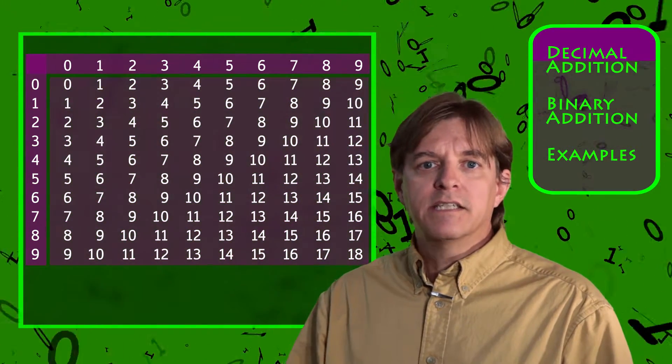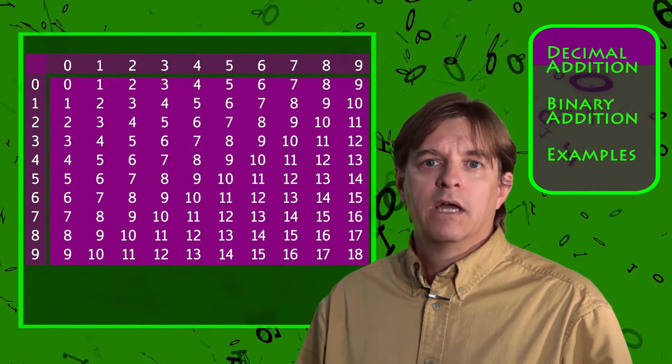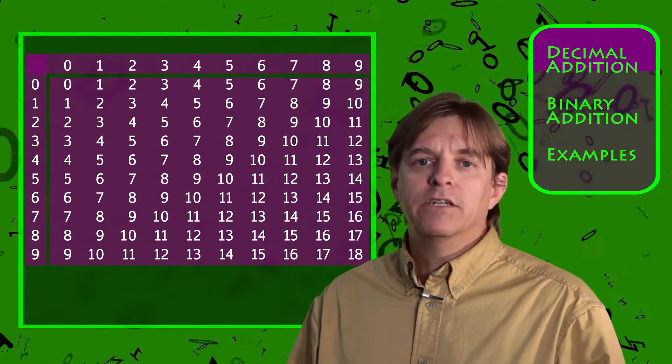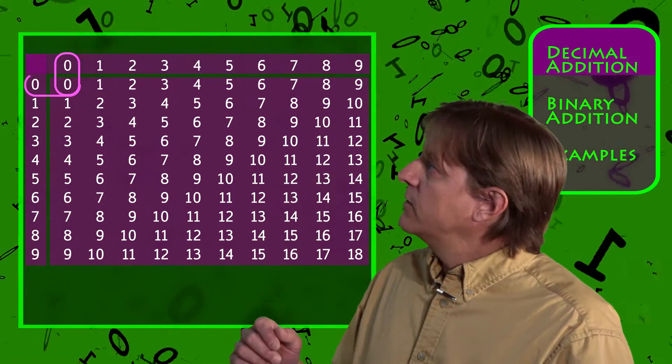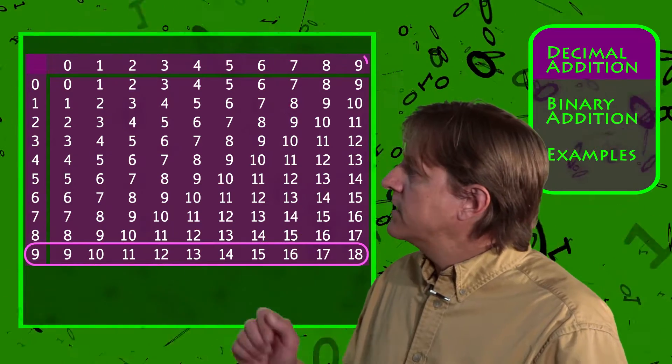Each cell contains the sum of its row and column header. This gives us the sums for all the single digit combinations. 0 plus 0 equals 0, all the way up to 9 plus 9 equals 18.